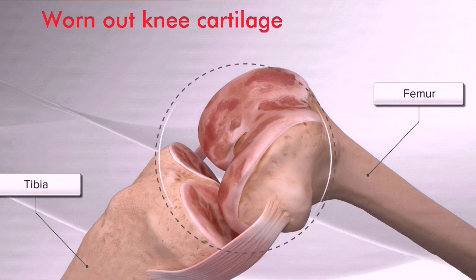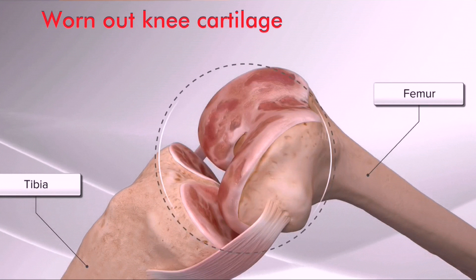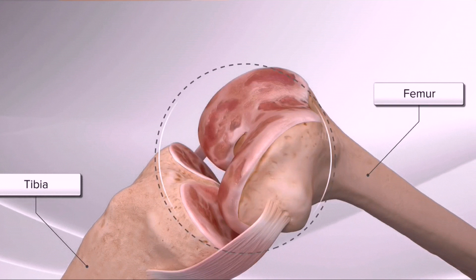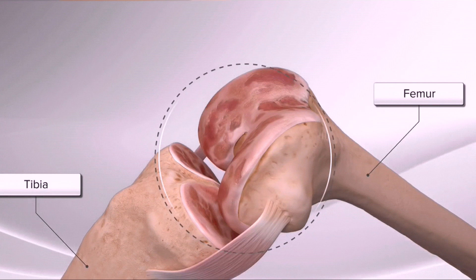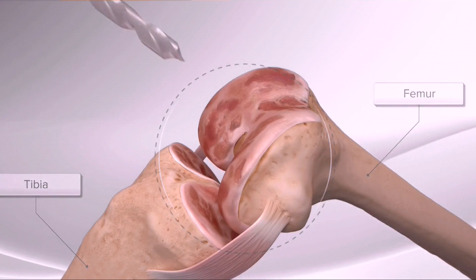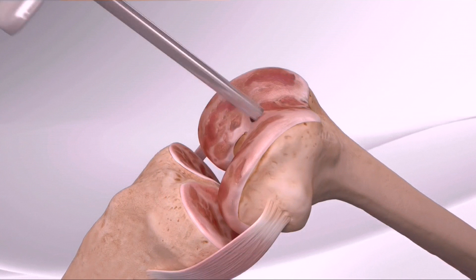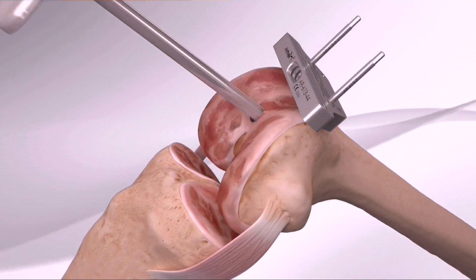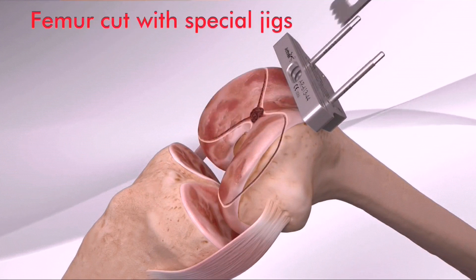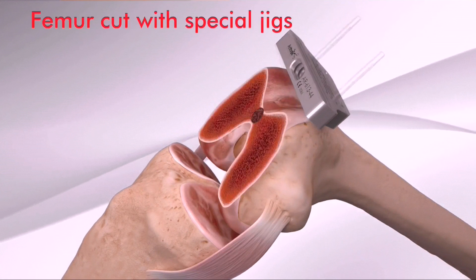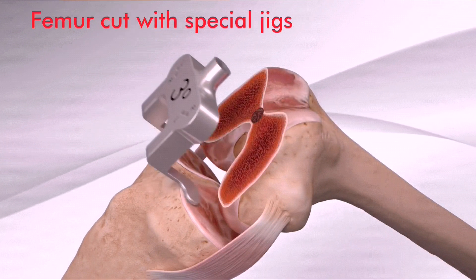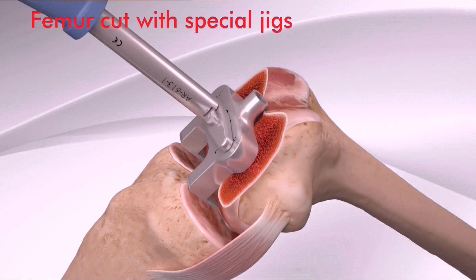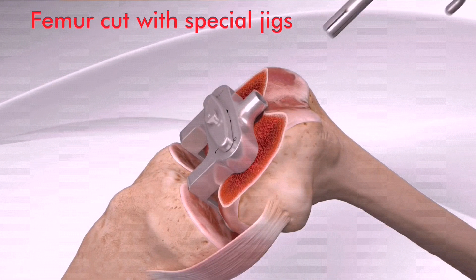In this case, the entire knee is affected and a total knee replacement is performed. During the surgery, your doctor uses a series of guides to help remove the damaged bone and prepare the femur, ensuring proper implant size and alignment.